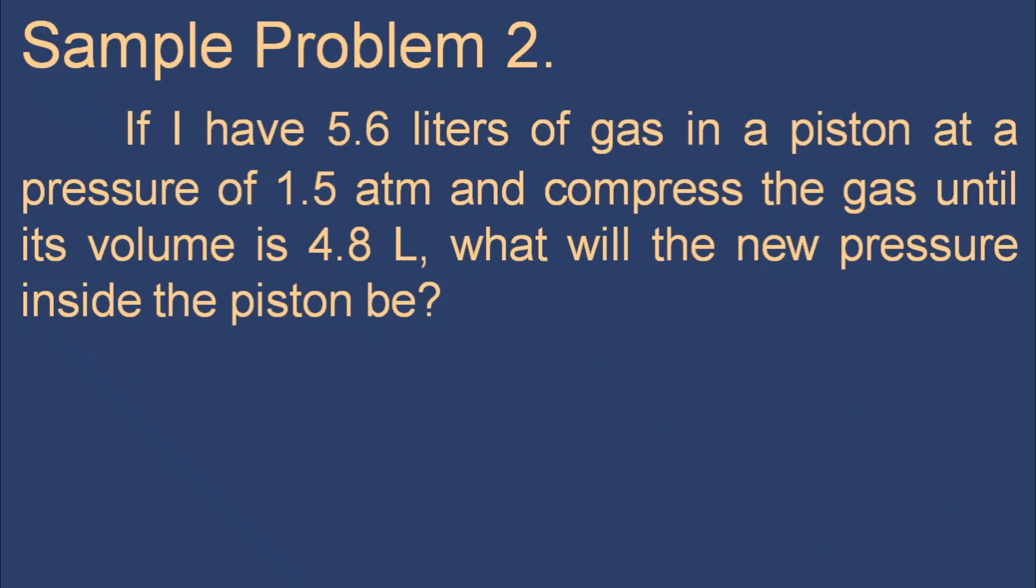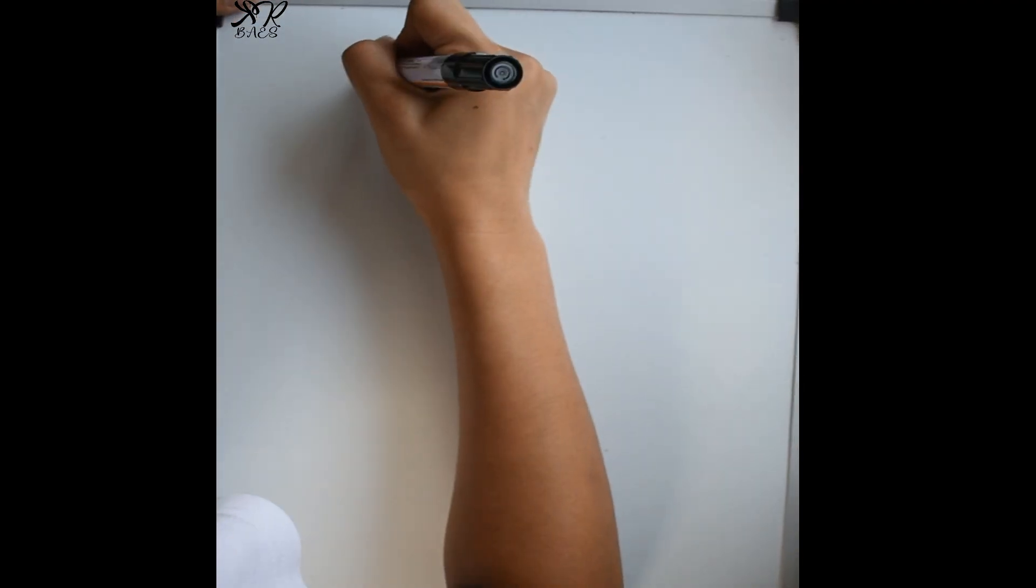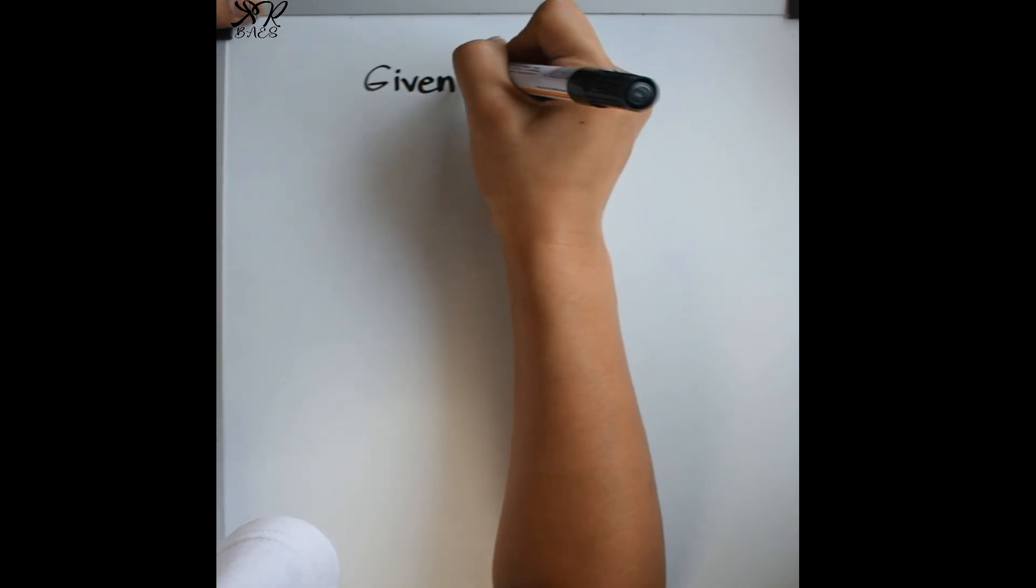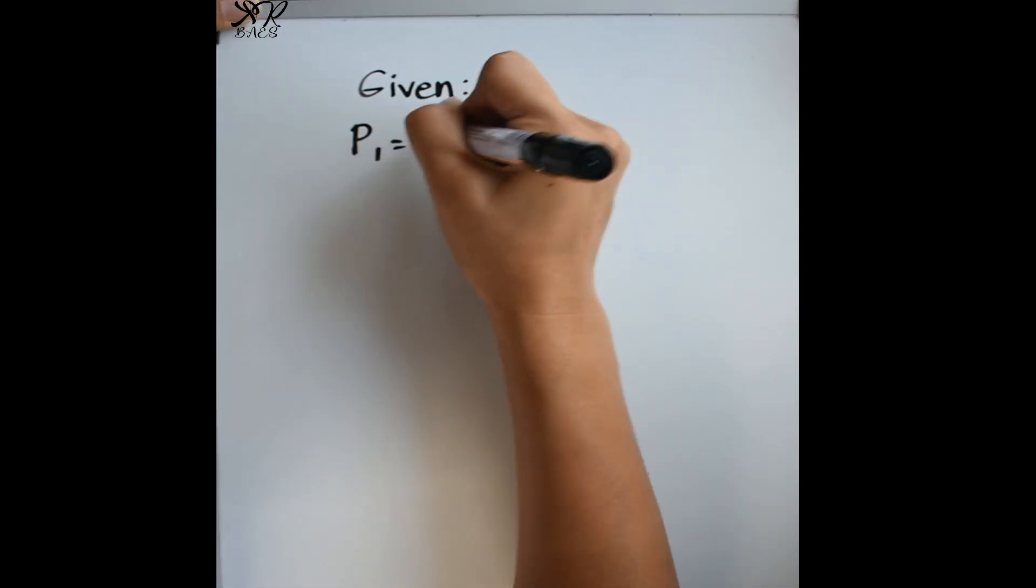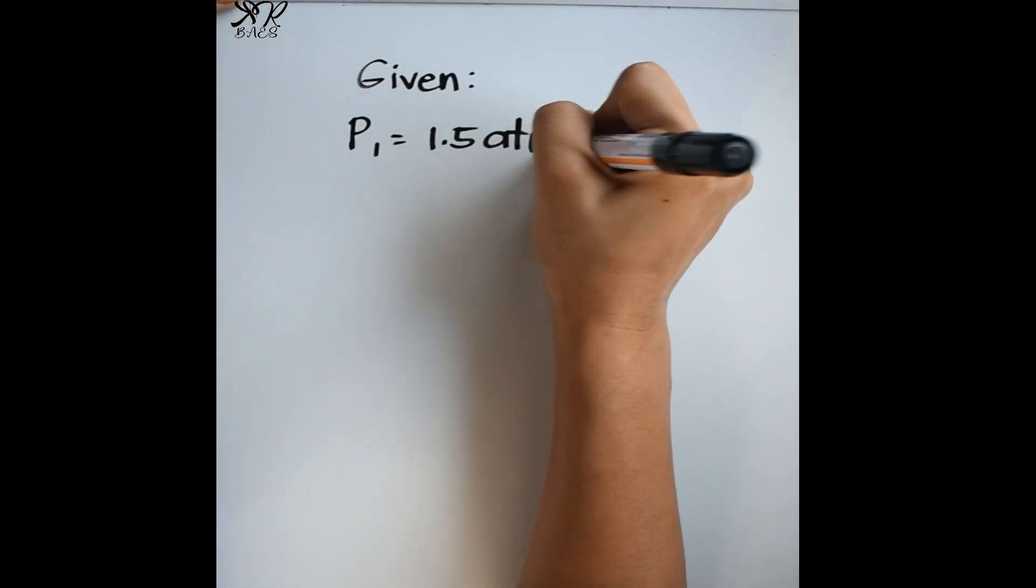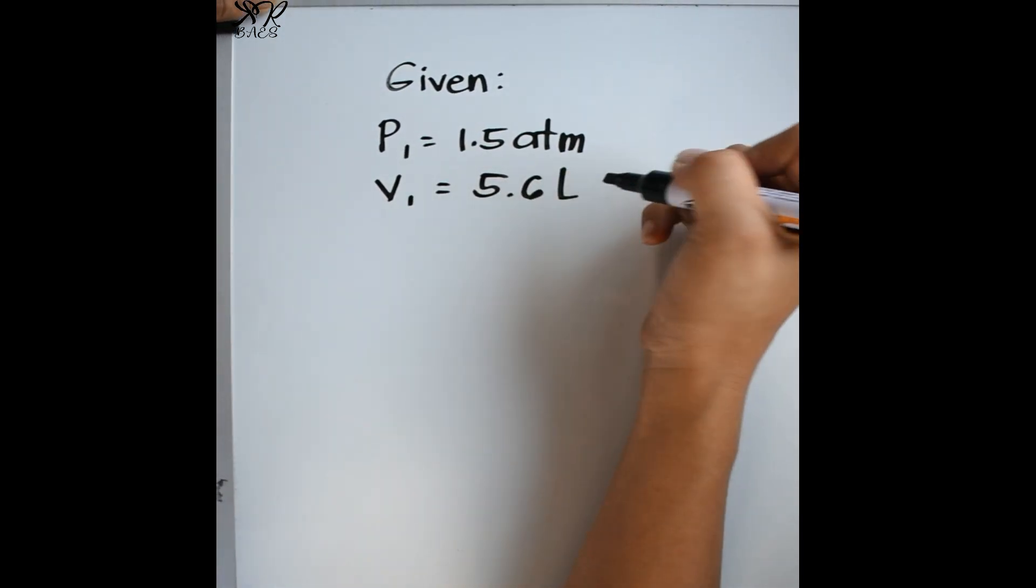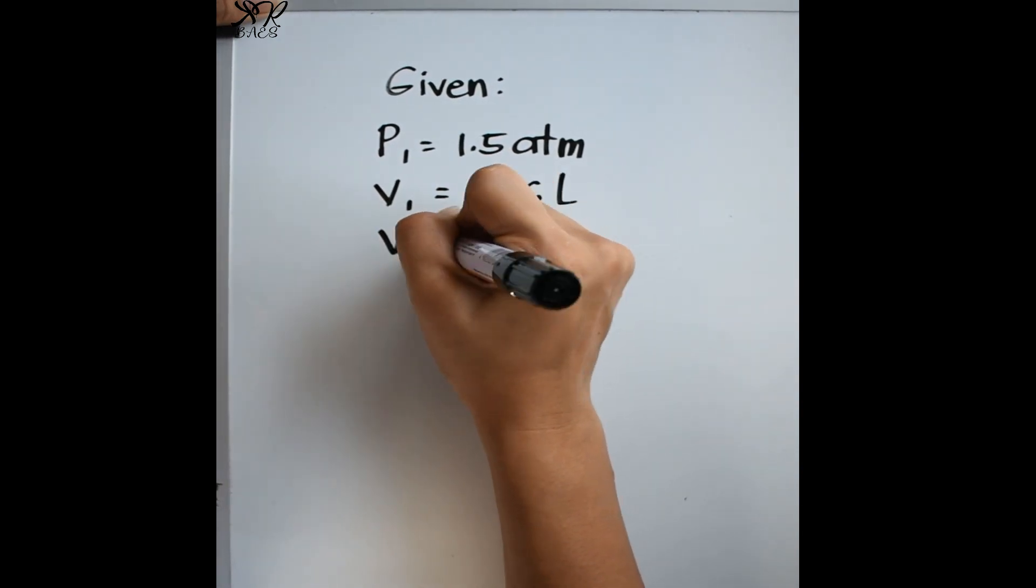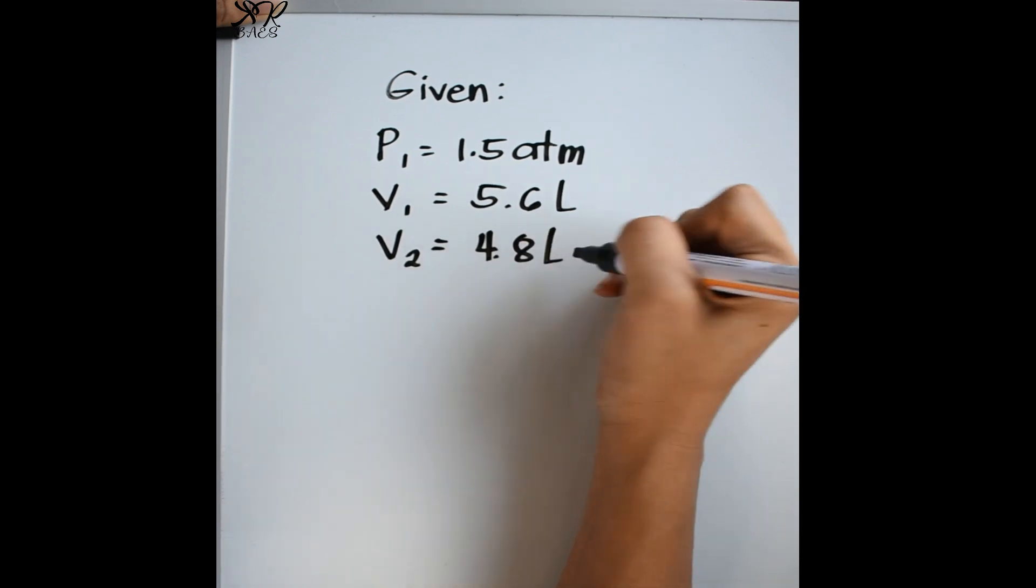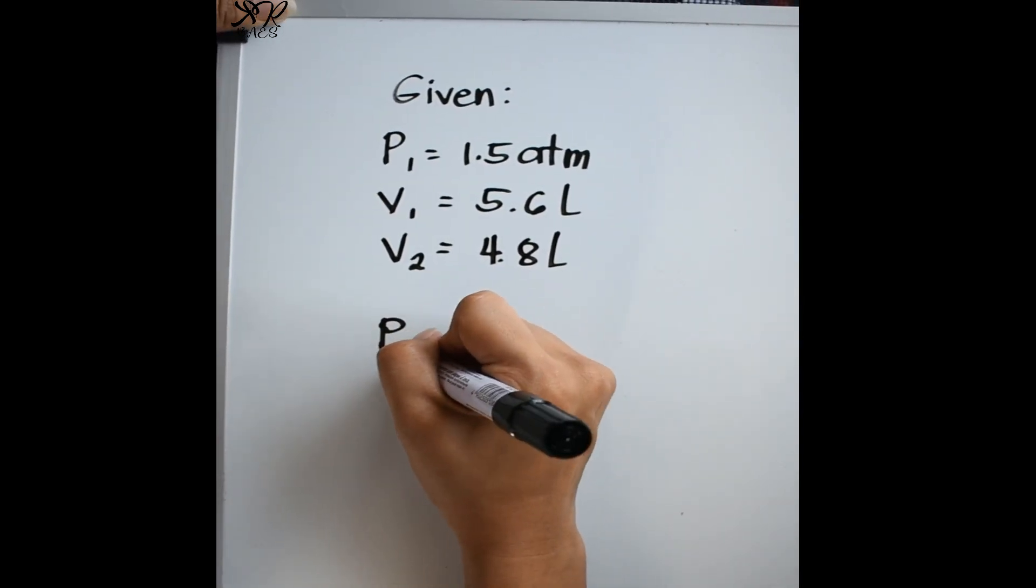Sample problem number two. If I have 5.6 liters of gas in a piston at a pressure of 1.5 atmosphere and compress the gas until its volume is 4.8 liters, what will the new pressure inside the piston be? So those are the given: P1 is equal to 1.5 atmosphere, V1 is equal to 5.6 liters, V2 is equal to 4.8 liters. And we are looking for the final pressure.